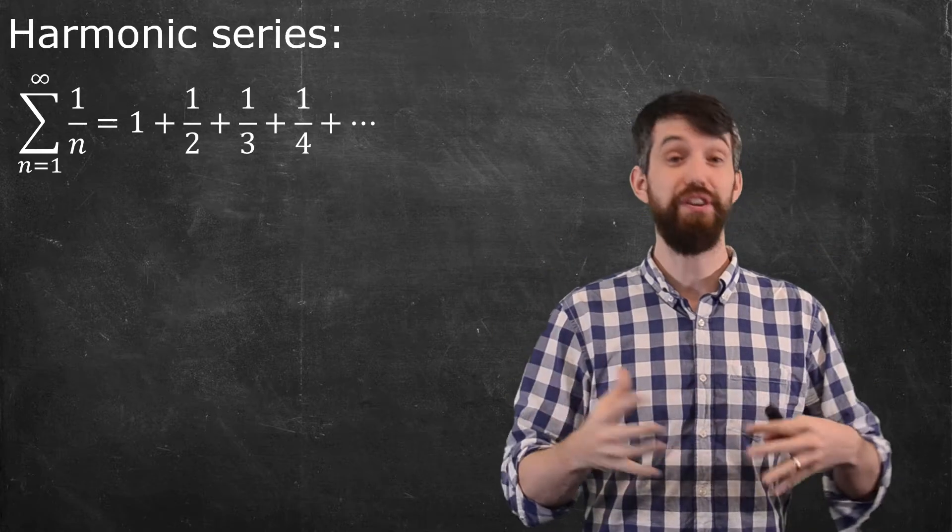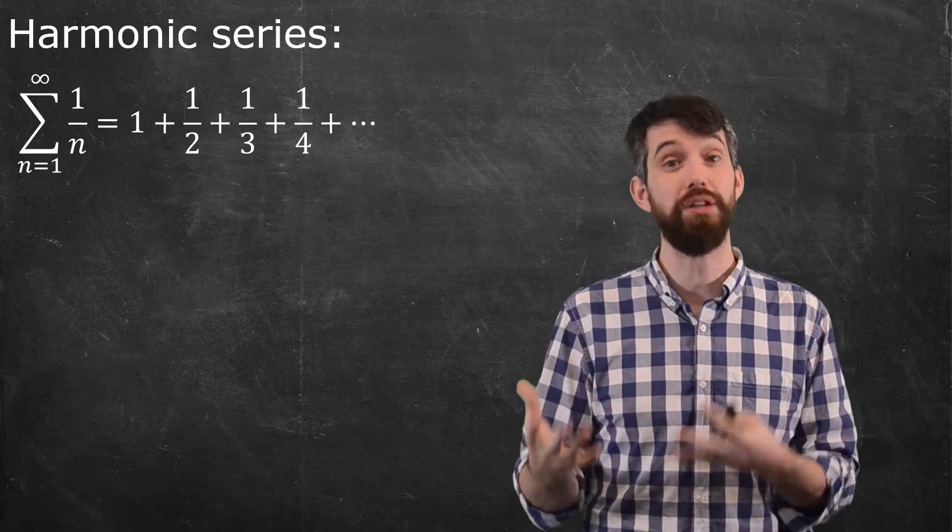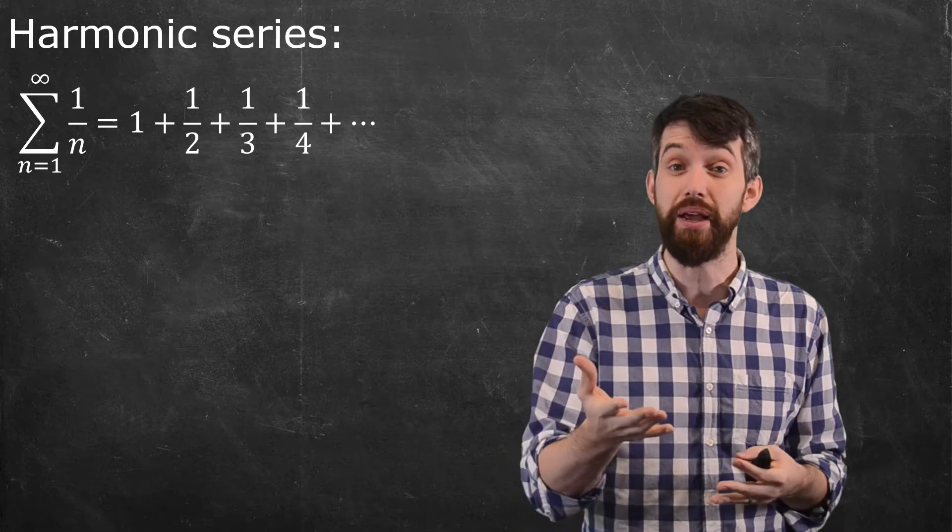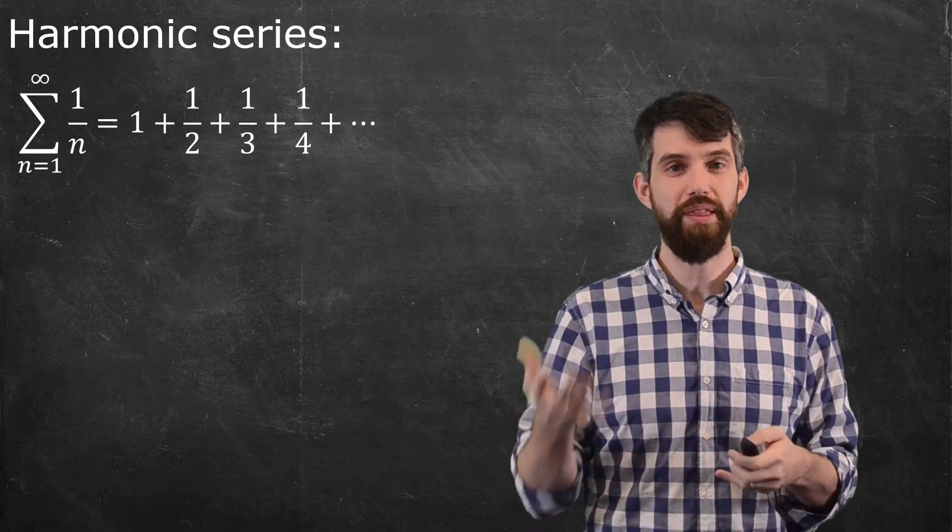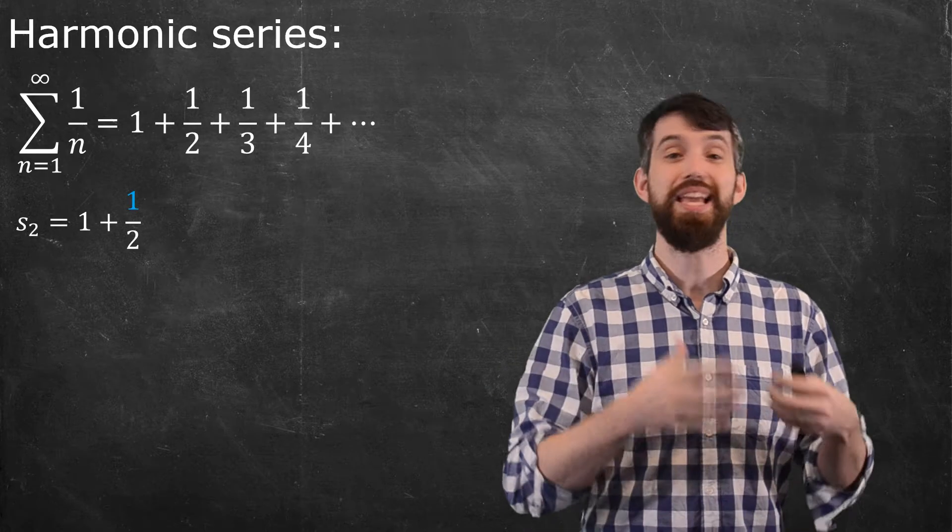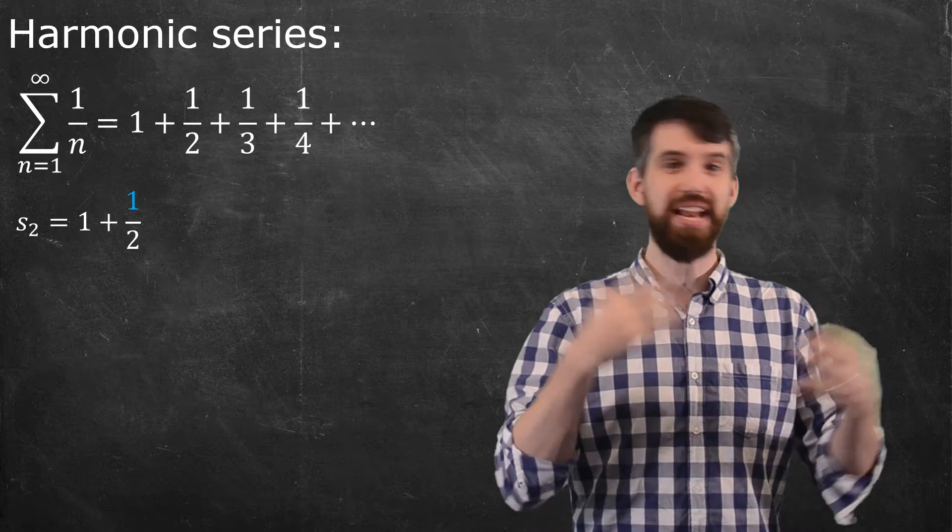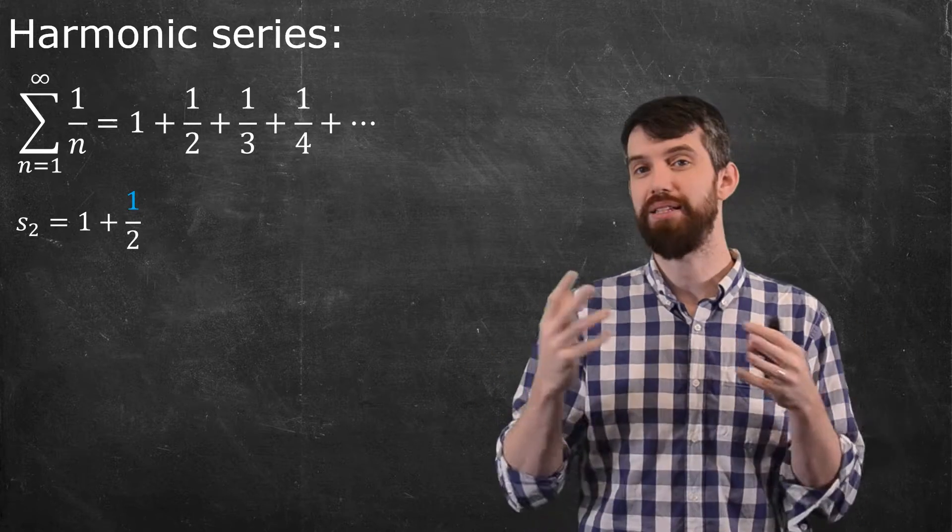I'll recall that to figure out convergence of a series, we look to the partial sums and take the limit of the partial sums as n goes to infinity. So in this case, if I try to figure out what, say, s2 is, well, this is adding up the first two terms, 1 plus a half.